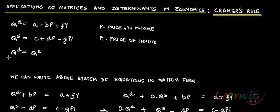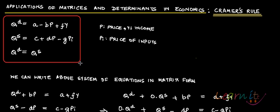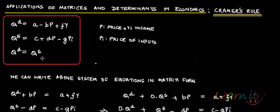This is an application of Cramer's Rule applied to a simple demand and supply model of microeconomics. The model has QD equal to A minus BP plus FY, where P is price and Y is income. QS is equal to C plus DP minus GPI, where P is the price of the commodity and PI is the price of inputs going into the production of this commodity. The third equation is the identity QD equals QS.